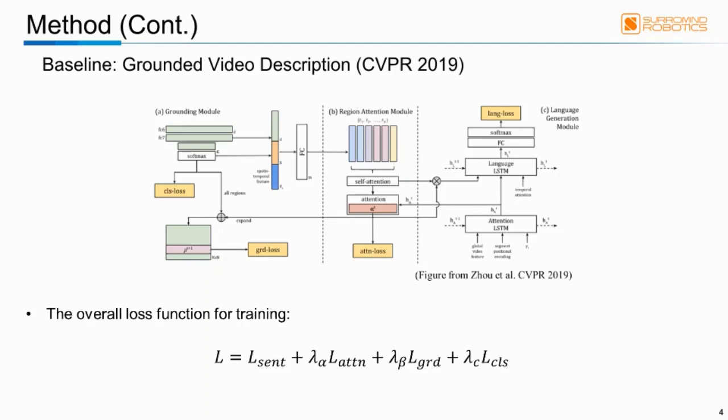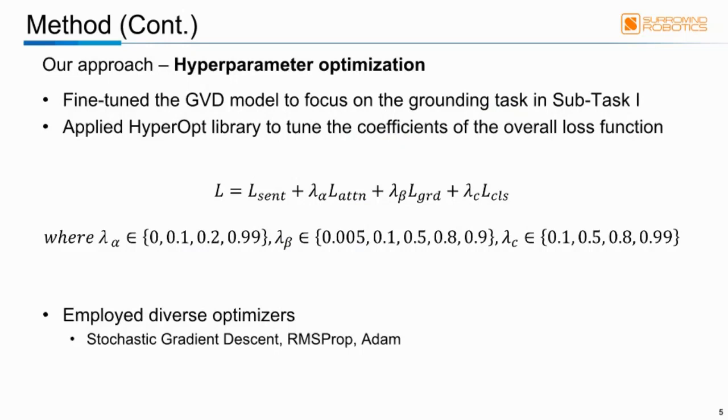Here, L_cent is the cross-entropy loss of each token for language generation. L_attention and L_grounding are the attention and grounding loss, respectively. These losses drive visually groundable words to attend on the correct region. L_class is the cross-entropy loss for the region label classification. Our approach to this task is to tune the baseline model with hyperparameter optimization methods, mainly focusing on the grounding task of subtask 1. As explained in the previous slides, the GVD model has two objectives and the overall loss function consists of four terms. So we applied the HyperOpt library to tune the coefficients of the objective function.